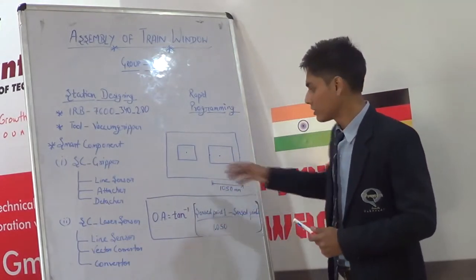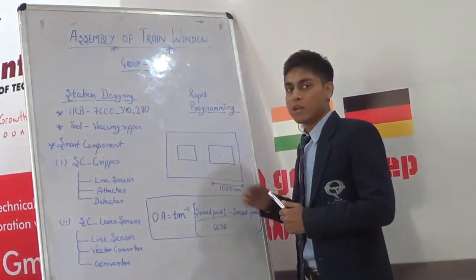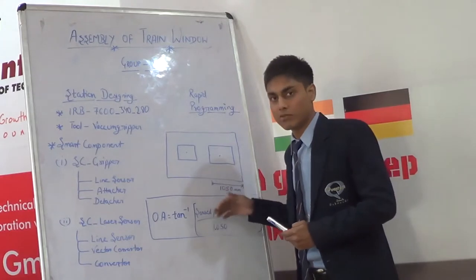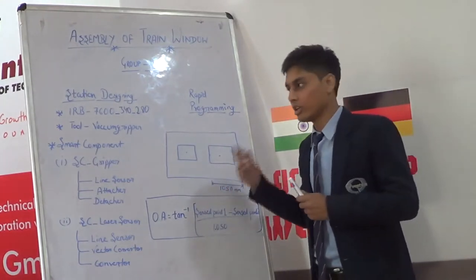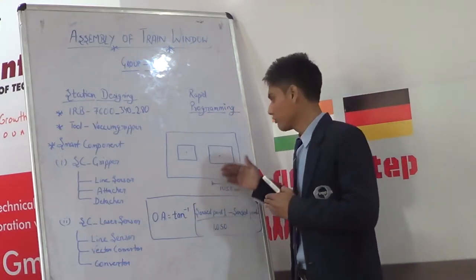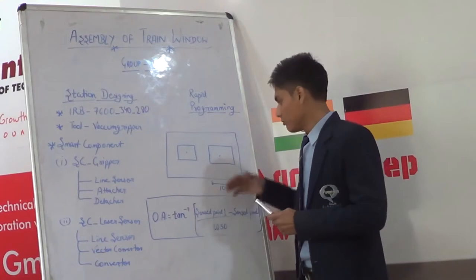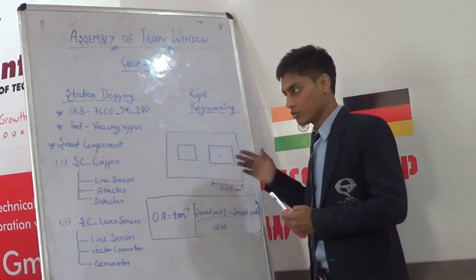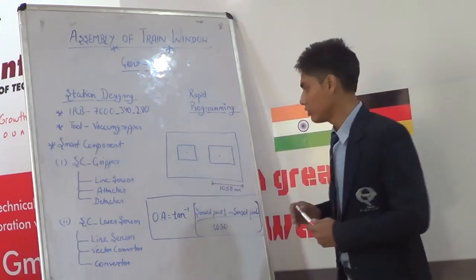We will then reorient the tool according to the orientation angle by using the relocate command in the programming. After reorienting the tool, the tool of our robot will be aligned to the train wall, and by this we make it easy for the robot to place the glass into the window easily.